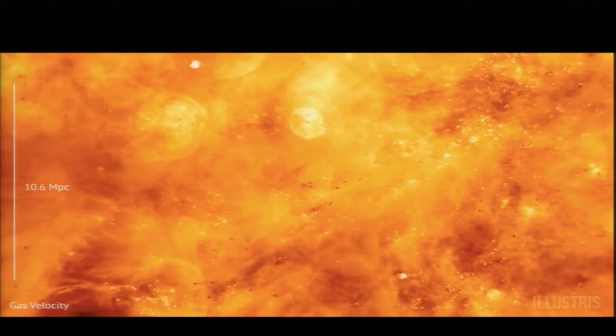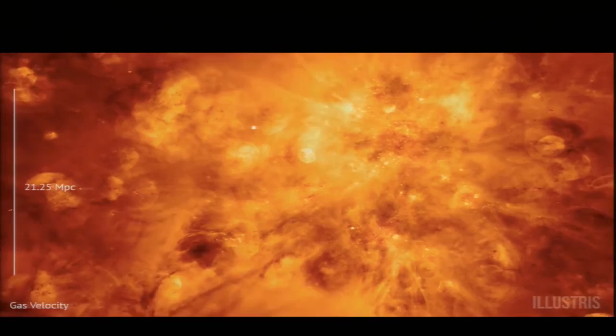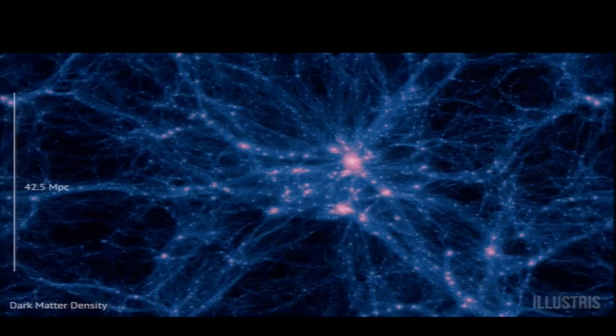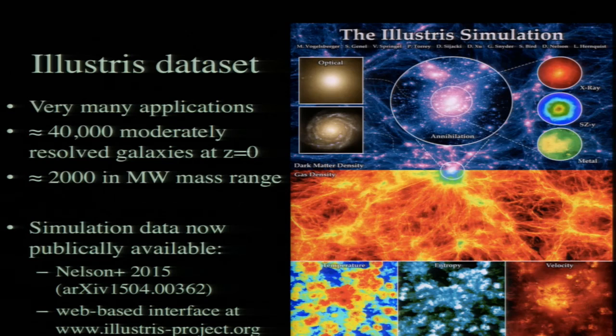Zooming back out, we also compute the velocity field of the gas and can track its kinematics as well as the kinematics of the stars. Going back to the dark matter density at redshift zero, you can see this interconnected web of filaments with a very large density range.